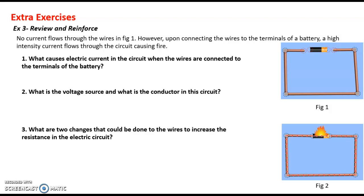Exercise three: review and reinforce. No current flows through the wires in figure one because we have an open circuit. However, upon connecting the wires to the terminals of the battery, high-intensity current flows through the circuit, causing fire. What causes electric current in the circuit when the wires are connected to the terminals of the battery? What is the voltage source and what is the conductor in the circuit?